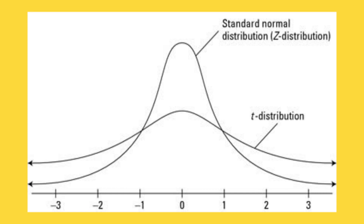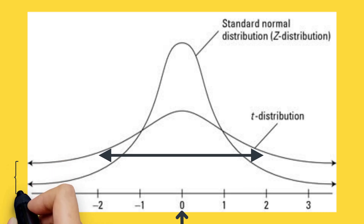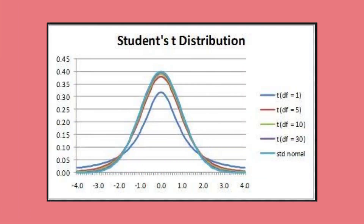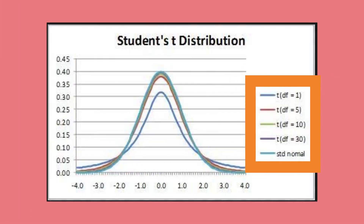Just like the standard normal distribution, a t-distribution is symmetrical with a mean of 0. However, the t-distribution is more spread out, meaning it has a higher standard deviation than 1. The t-distribution also has more probability for outcomes distant from the mean — that is, it has fatter tails than the standard normal distribution. As the number of degrees of freedom increases with the sample size, the spread decreases and the t-distribution approaches the standard normal distribution.